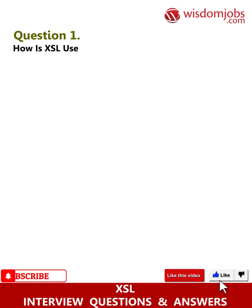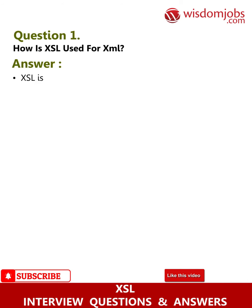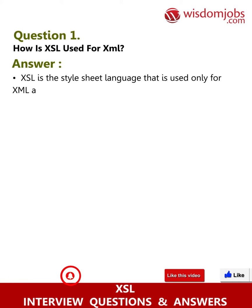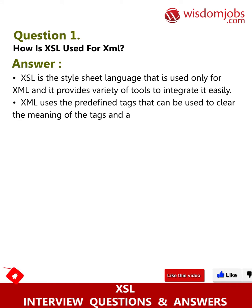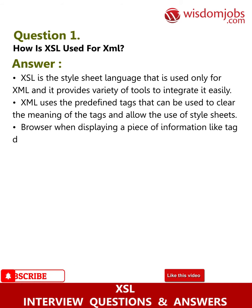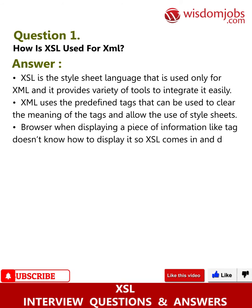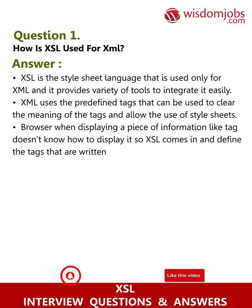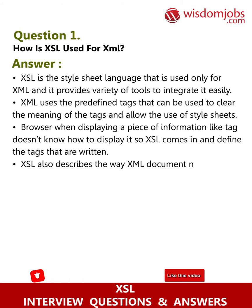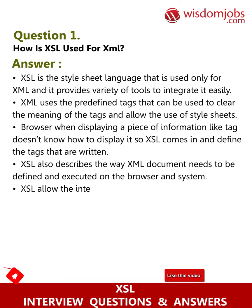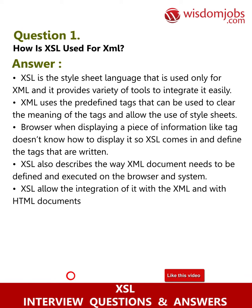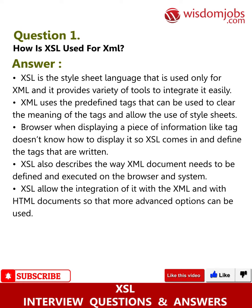Question 1: How is XSL used for XML? XSL is the style sheet language that is used only for XML, and it provides a variety of tools to integrate it easily. XML uses predefined tags that can clear the meaning of the tags and allow the use of style sheets. XSL comes in and defines the tags, describes how the XML document needs to be displayed on the browser, and allows integration with HTML documents.